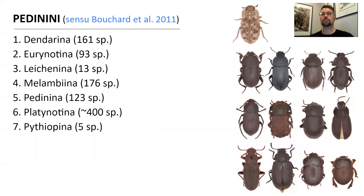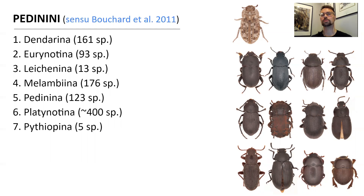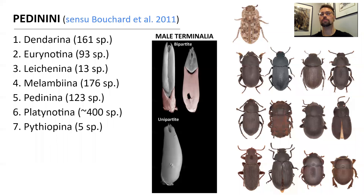It all started a few years ago when I received a grant from the Polish equivalent of NSF to study the phylogenetic relations within the darkening beetle tribe named Pedinini. As you can see, at the time the tribe grouped seven sub-tribes. Morphological definitions of the majority of them were mostly based on the structure of male terminalia.